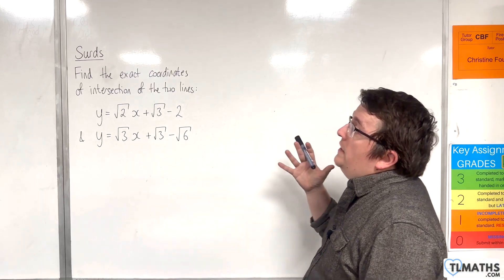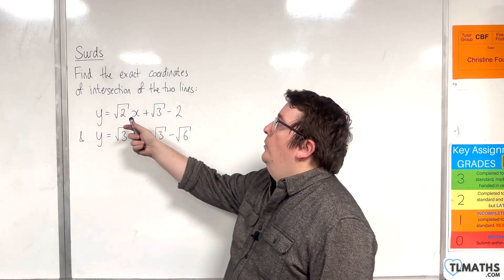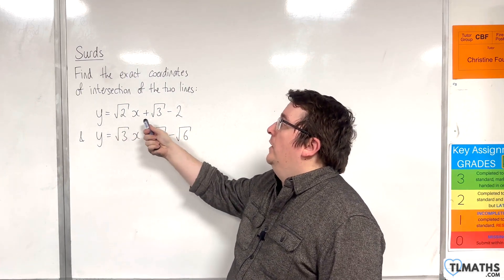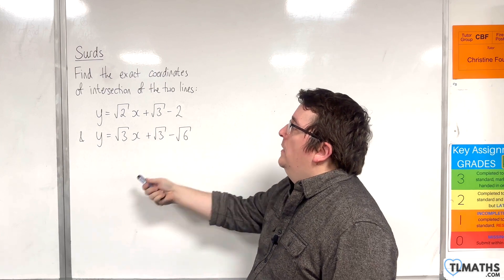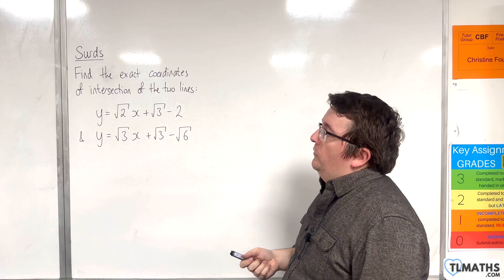In this video, I want to find the exact coordinates of intersection of the two lines: y equals the square root of 2 times x plus root 3 take away 2, and y equals the square root of 3 times x plus root 3 take away root 6.